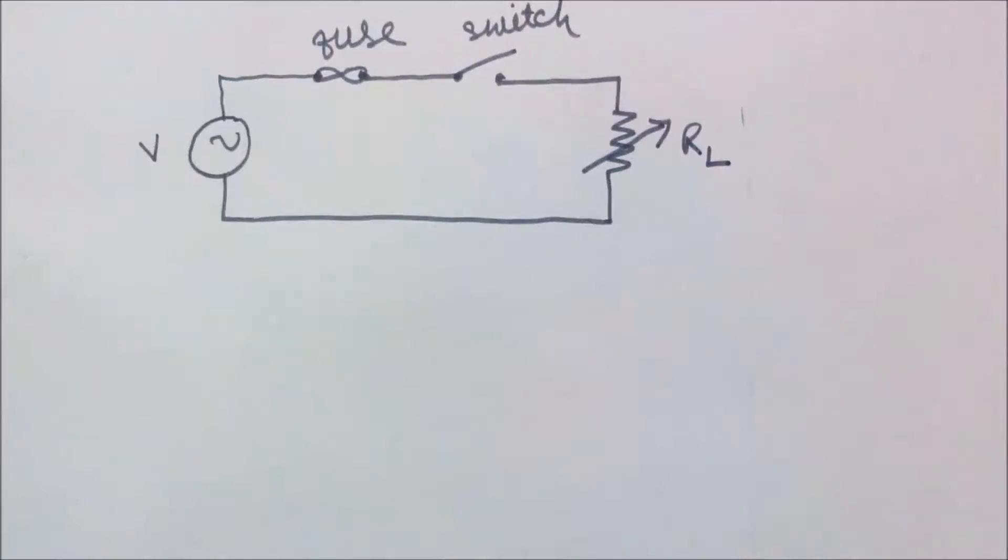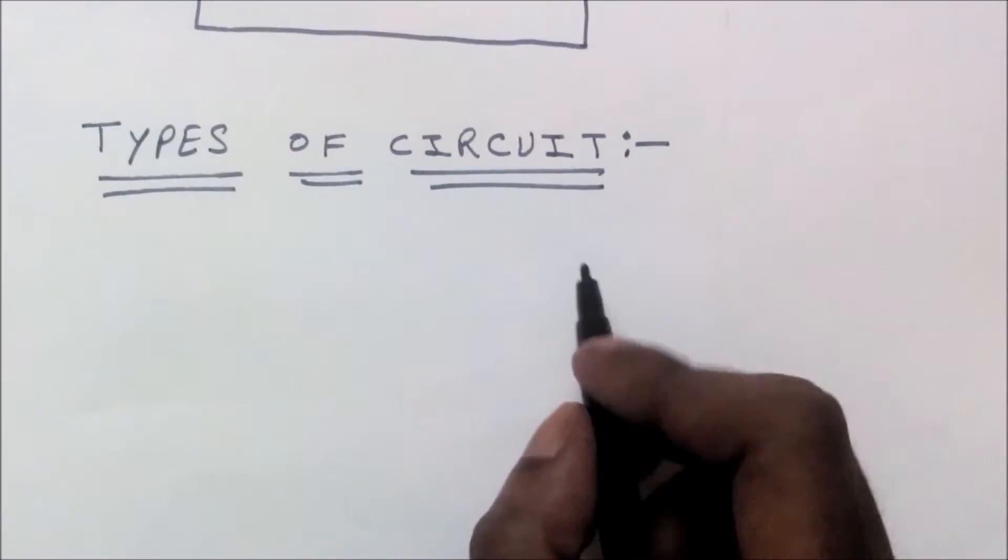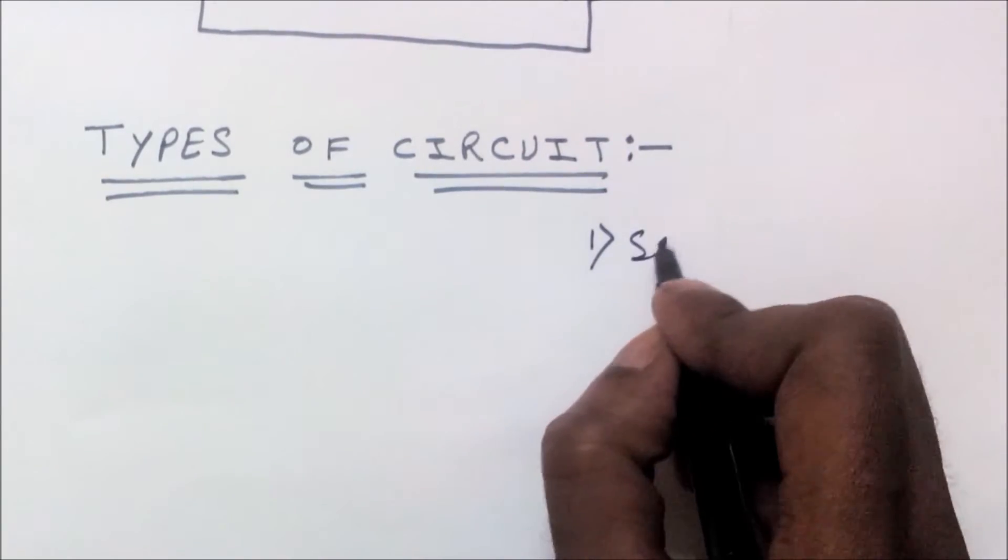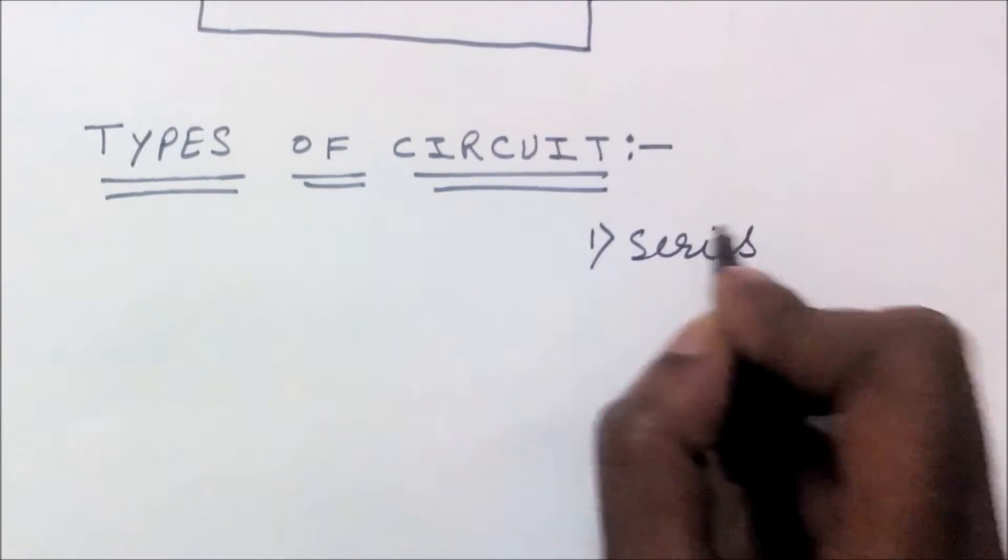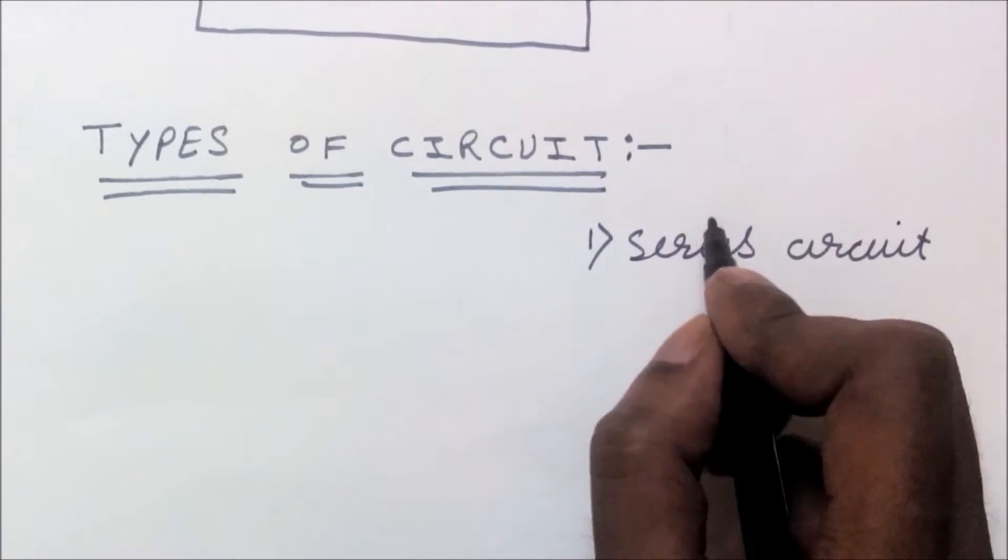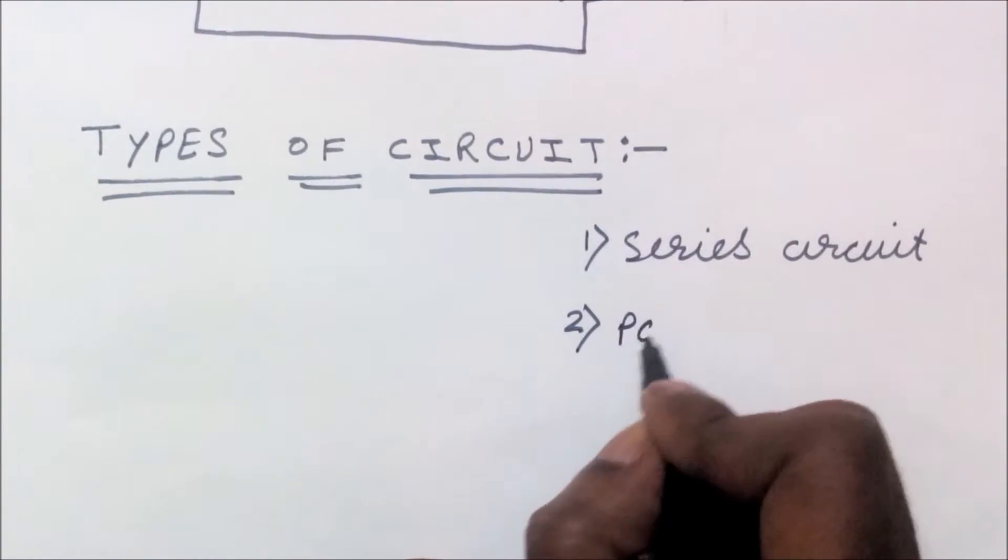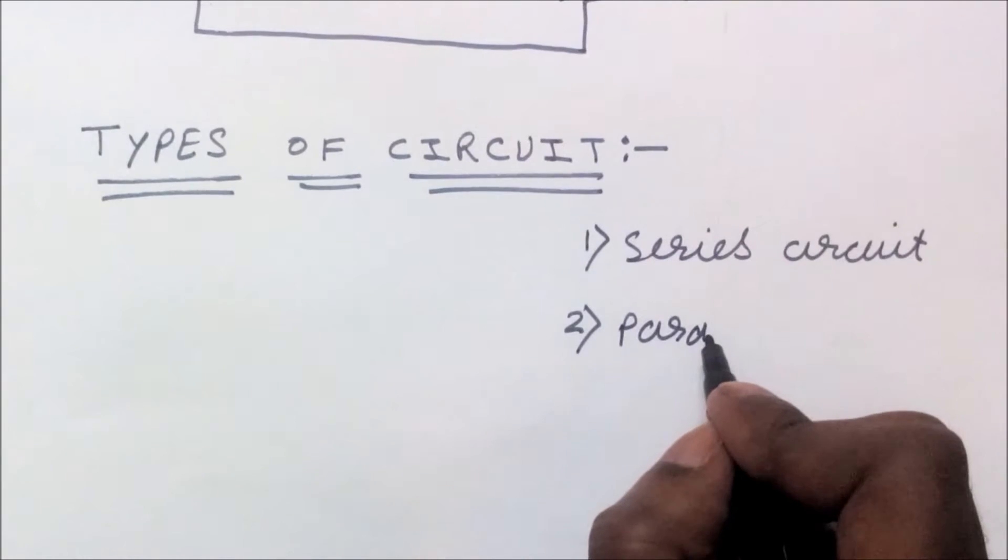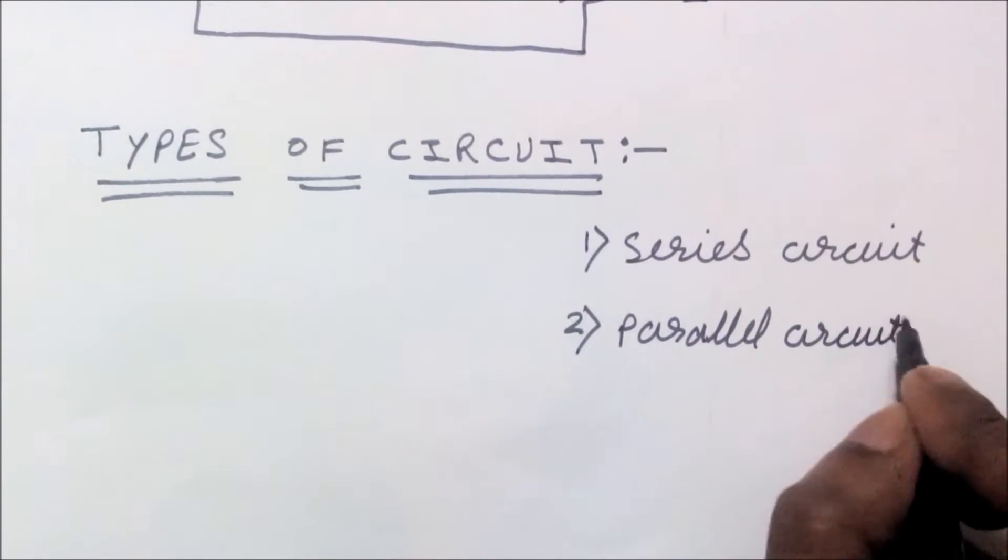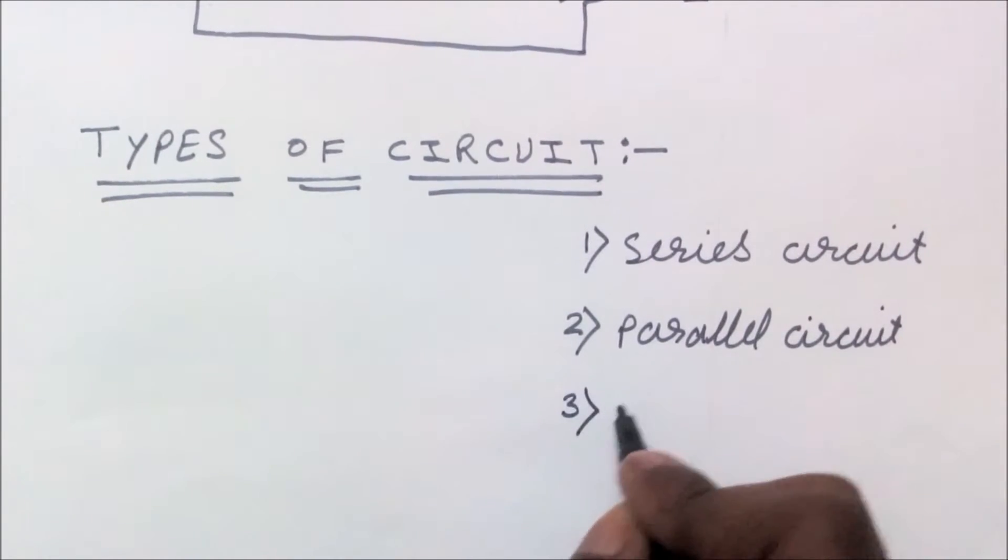Next, I am going to tell you about types of circuits. There are three types of circuits: Number one, series circuit. Number two, parallel circuit. Number three, complex circuit.